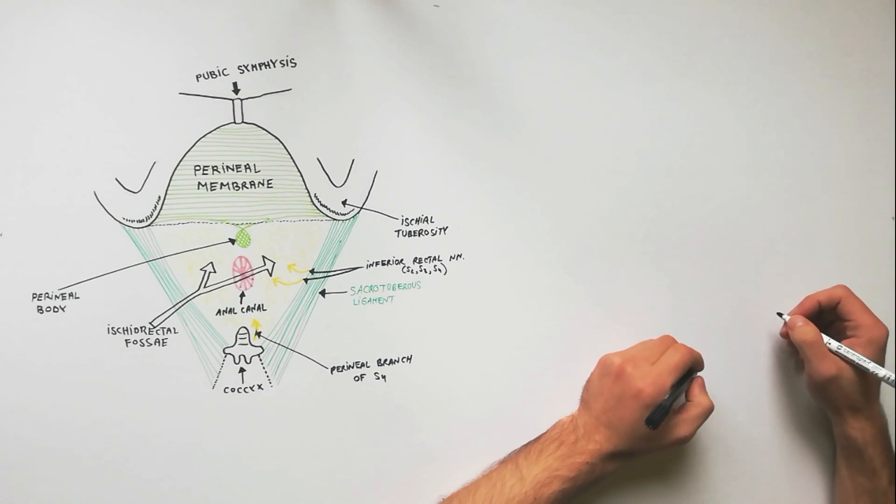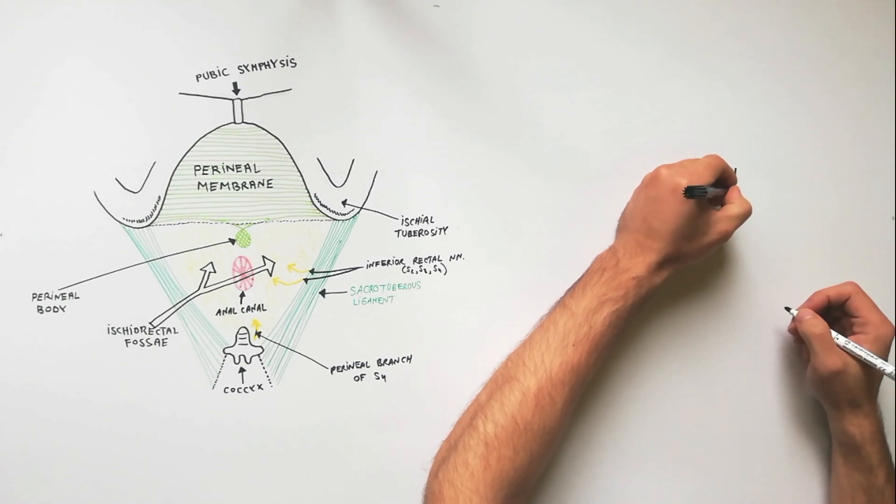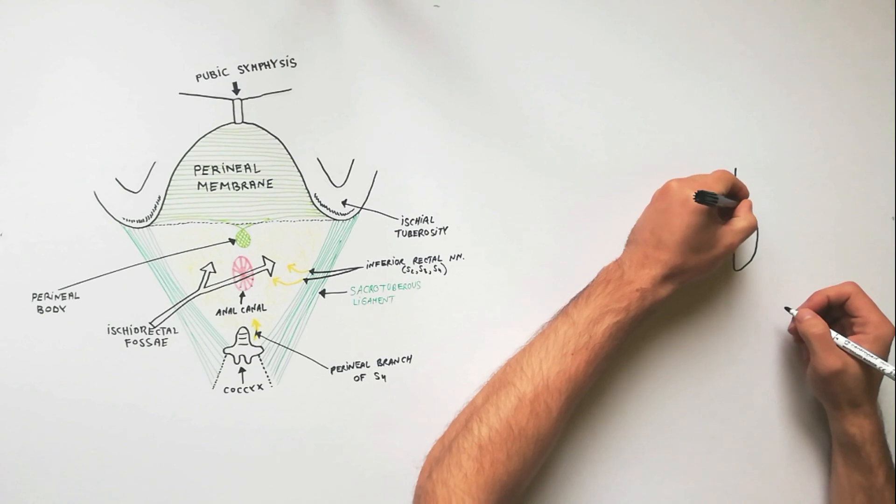To indicate the boundaries and contents of ischiorectal fossae, we must draw a coronal section through the posterior perineum. Boundaries of ischiorectal fossae are as follows.